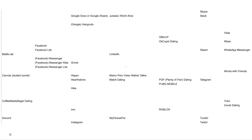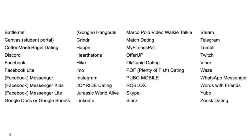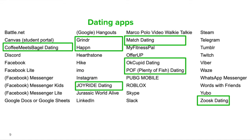Looking more closely at these 40 apps, even before considering specific OSI design characteristics, we can see that online status information in some apps might be especially sensitive. For example, someone who sees that I'm online in a dating app might infer that I'm single. If I stop coming online regularly in those apps, they might guess that I've started seeing someone.